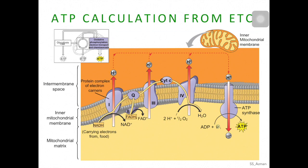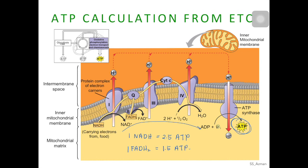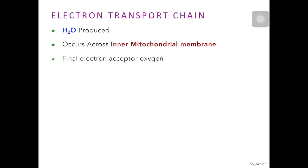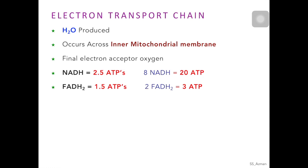Once all of those NADH and FADH2 molecules get to the electron transport chain and undergo chemiosmosis, ATP will be generated. We need to know how many ATPs can be generated from one molecule of NADH and one molecule of FADH2. One molecule of NADH can produce 2.5 molecules of ATP, while one FADH2 molecule can produce 1.5 ATP. For the purpose of this course, you just have to know these numbers.